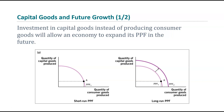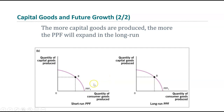Compare that picture to this one. If instead of producing at point A we're at point B, where we're putting about half our resources toward consumer goods and half toward capital goods — a lot more toward capital goods than before — what does that mean for the long run? In the long run, our production possibilities will shift out a lot. The more we devote to capital goods today, the greater our production possibilities will be tomorrow.